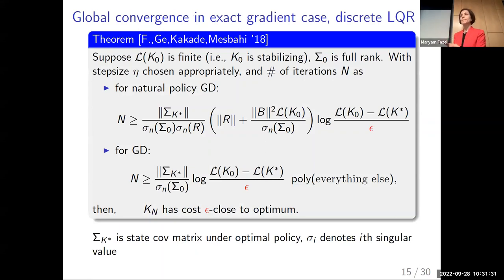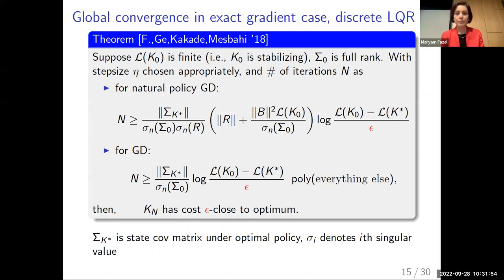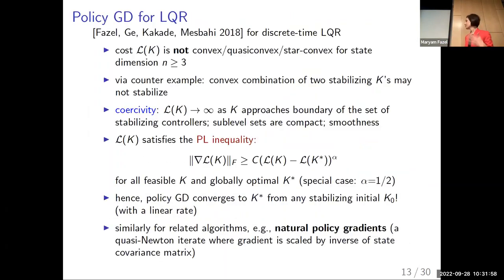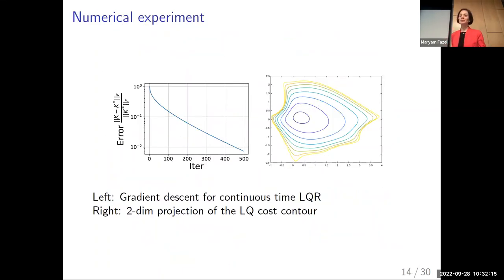Any questions so far? [Audience question]: For natural policy gradient, the covariance of the state — is that the covariance of the state visitation distribution under the current controller? Yes, that's right. In natural policy gradient, the state covariance matrix is the state covariance under the current policy — the states visited (also called state visitation in RL) under the current policy. For details, I'd refer you to our paper.